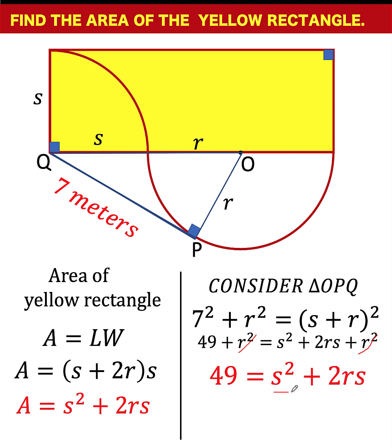Now, compare this s squared plus 2rs with the right side here, which is also s squared plus 2rs. They are exactly the same. So, by substitution, this becomes 49 equals the value of s squared plus 2rs, which is the area of the yellow rectangle. And therefore, we now know that the area of this yellow rectangle is 49 square meters, and this problem is now solved.